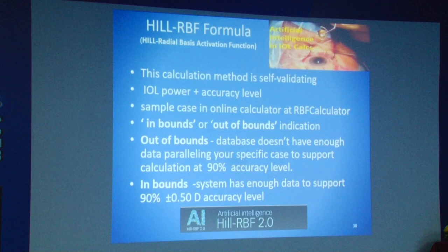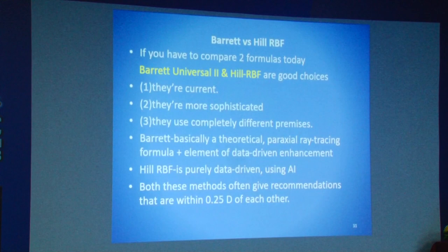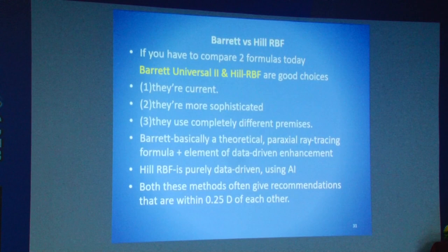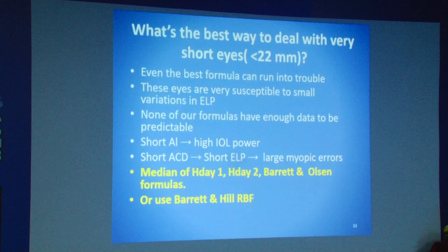The Hill RBF formula is valuable because it not only gives IOL power, it also gives an accuracy level — telling you whether results are in-bounds or out-of-bounds depending on whether your patient's data parallels the data within the database. Comparing Barrett Universal 2 and Hill RBF: both are current and sophisticated, though they use completely different premises — Barrett is a theoretical paraxial formula while Hill RBF uses artificial intelligence. Both give recommendations that are within 0.25 diopters of each other. Should you use multiple formulas and average results? Douglas Koch follows this policy, but Holliday and Barrett advocate using horses-for-courses — specific formulas for specific conditions.